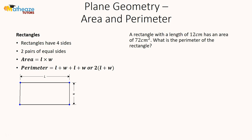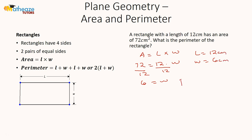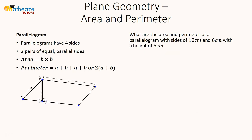We have a rectangle with a length of 12 and an area of 72. Area is length times width, so 72 equals 12 times width. Dividing by 12, the width is 6 centimeters. The perimeter is 2 multiplied by the sum of the length and width: 2 times (12 plus 6) equals 2 times 18, which is 36 centimeters.